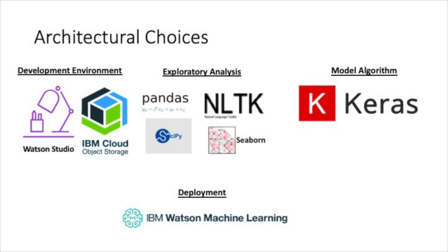I made a number of architectural choices for this project. For my development environment, I used Watson Studio for the code itself, and for data storage I used IBM's Cloud Object Storage. This allowed us to hold everything in the cloud and call different APIs as necessary. For exploratory analysis, I didn't use Spark because the data was only 100 megabytes. I used the standard toolkit: Pandas, SciPy, NLTK, and Seaborn. For my model, I used Keras for deep learning, along with recurrent neural networks. For deployment, I used IBM's Watson Machine Learning, which allowed me to call the model from the internet using a REST API after publishing it.